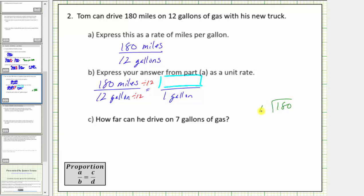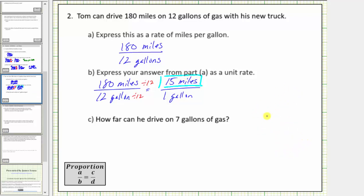One hundred eighty divided by twelve: twelve goes into eighteen once, one times twelve is twelve, we subtract and the difference is six. Bringing down the zero, there are five twelves in sixty, five times twelve is sixty, the difference is zero. Therefore the quotient is exactly fifteen, which means the unit rate is fifteen miles per gallon.